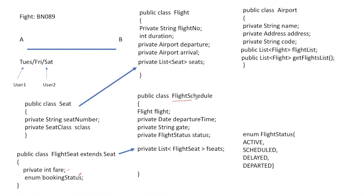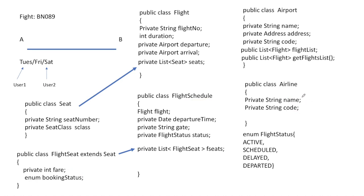FlightSchedule class contains flight information, list of flights, departure time, gate, and status. One more class is Airline — as mentioned, Indigo can have multiple flights. The Airline class has a name, a unique code, and a list of all flights on that airline. These are all the entities that are part of flight management.